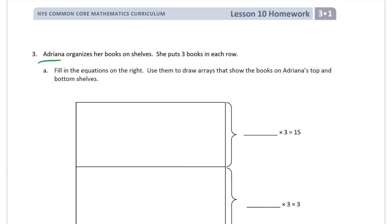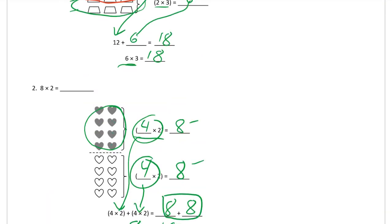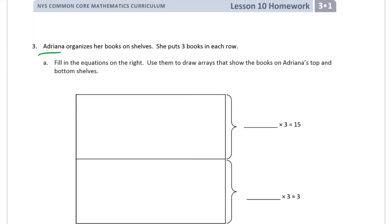Adriana. I mean, these things, this is not easy, especially in the beginning. So I hope these explanations are helping. Lesson 10 Homework. Adriana, this is our second page, she organizes her books on shelves, and she puts three books in each row. We're going to fill in the equations on the right. Those are these. We're going to fill those in and use them to draw arrays. So we're going to have to draw arrays that show the books on her top and bottom shelves. So here's the top shelf. You don't have to draw these labels. We can see what top and bottom is. But I just like to label these.